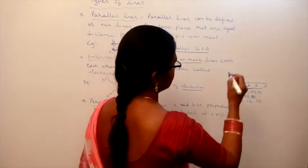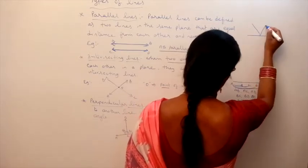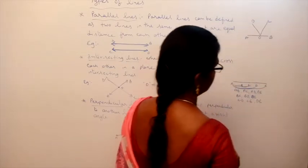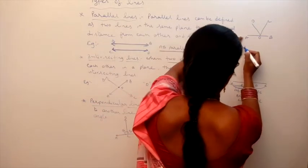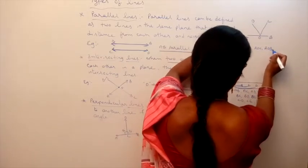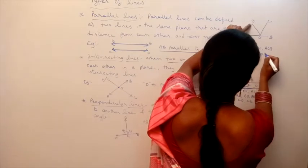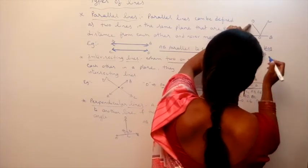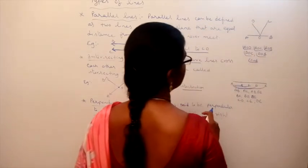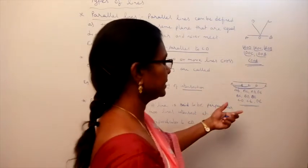Suppose we have rays from point O with points A, B, C, D around it. How many angles can we write? Starting with A: angle AOD, angle AOC, angle AOB. Then: angle DOC, angle DOB, and angle COB. So we can write six angles. And from the five-point line segment example, we can draw ten line segments.